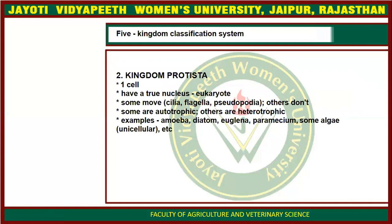The next kingdom is Kingdom Protista. Kingdom Protista is also simple, like Monera, because they also have a single cell. But the difference is they have a true nucleus, meaning they have a membrane around their DNA or RNA — their genetic material is surrounded by a nuclear layer. Some of them can move due to presence of cilia, flagella and pseudopodia, and some cannot. Some organisms are autotrophic and some are heterotrophic. Examples include Amoeba, Diatom, Euglena, Paramecium and Algae.